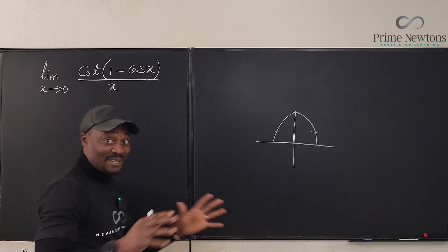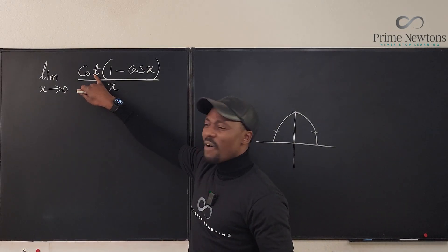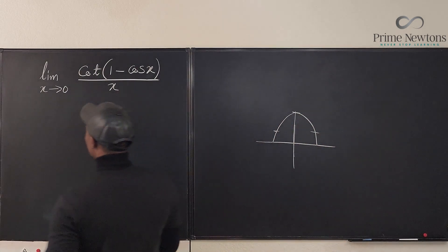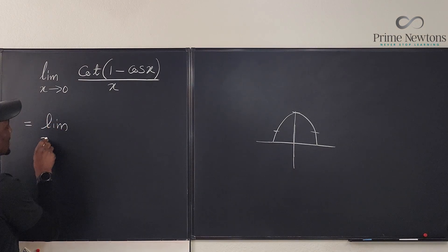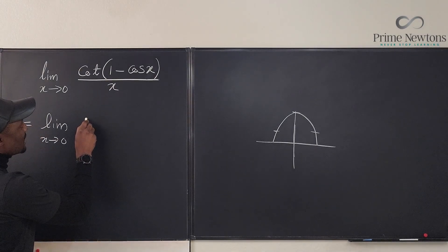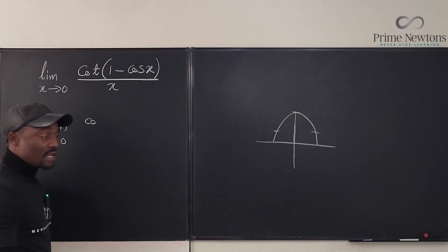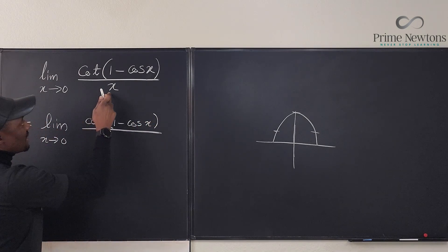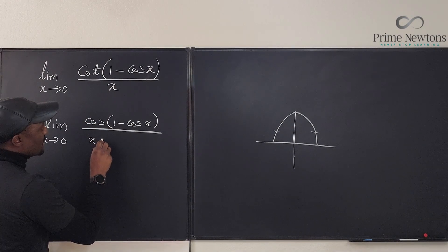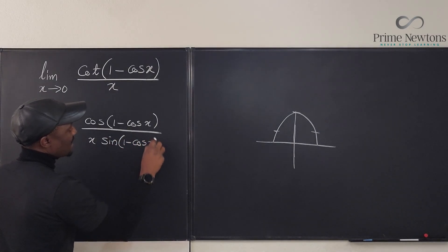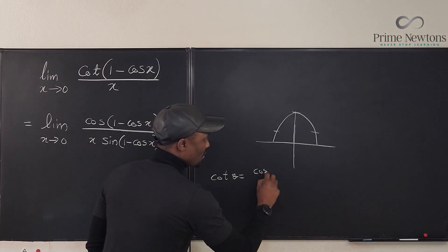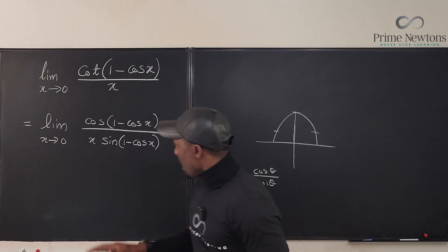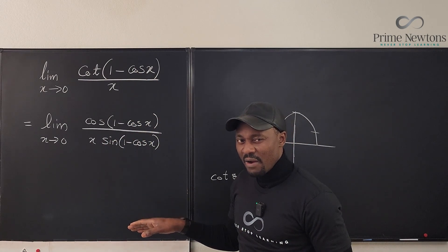We don't really know how the graph of cotangent would behave when you have an argument of one minus cosine, so we might as well write the algebra. Cotangent is cosine over sine, so this becomes the limit as X goes to zero of cosine of (one minus cosine X) divided by X times sine of (one minus cosine X). Don't be confused — cotangent(θ) = cos(θ)/sin(θ), and here my θ is the argument (one minus cosine X). So I have written it this way.